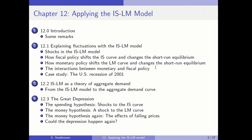Welcome back to class. Let's have a look at the outline. We started with chapter 12.1 explaining fluctuations within the IIS model. We looked at different shocks, how they affect GDP in a negative way, and we asked the question whether an expansionary fiscal or monetary policy helps in order to cure the underlying problem — the low level of GDP and high level of unemployment. We also talked about the interactions between monetary and fiscal policy, and we learned that the effects of a fiscal policy also depend on the reaction of the central bank.